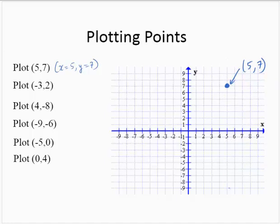The point (-3, 2) is where x is negative 3 and y is positive 2. So the x-coordinate is negative 3, the y-coordinate is 2. We intersect those. This is the point (-3, 2).